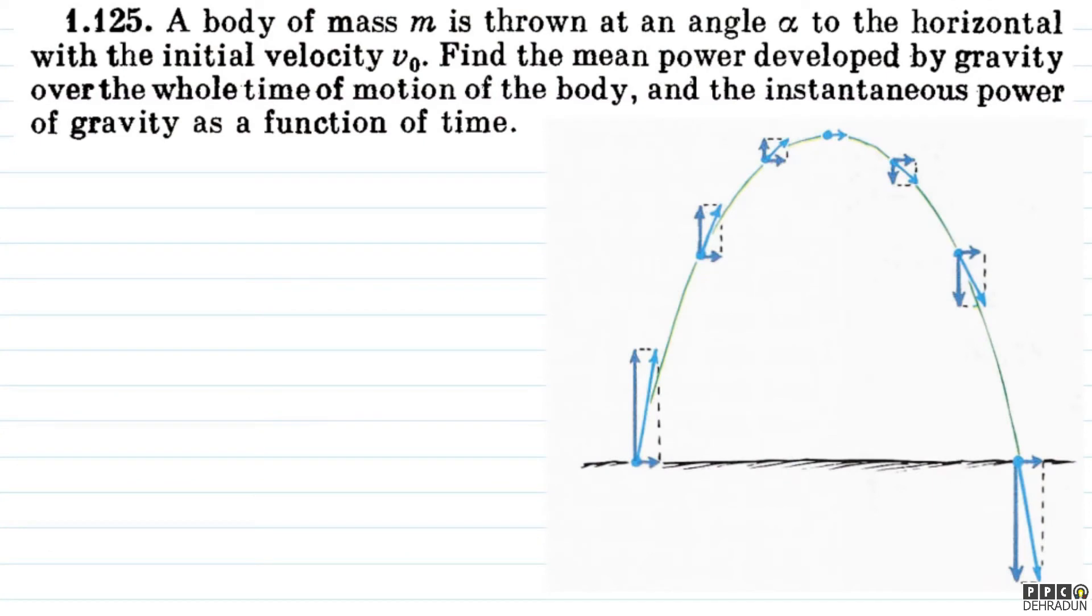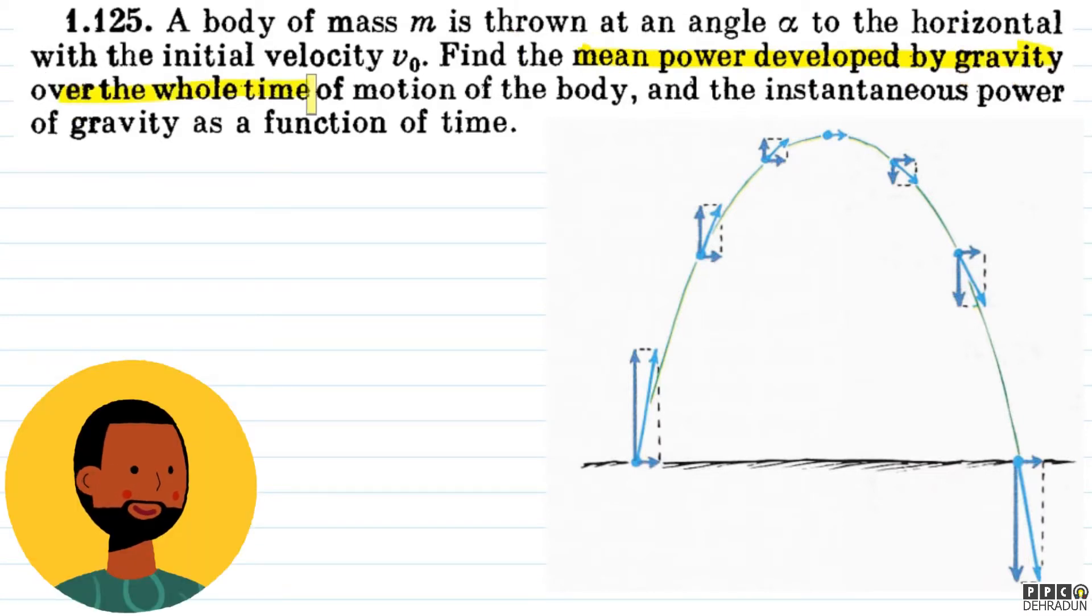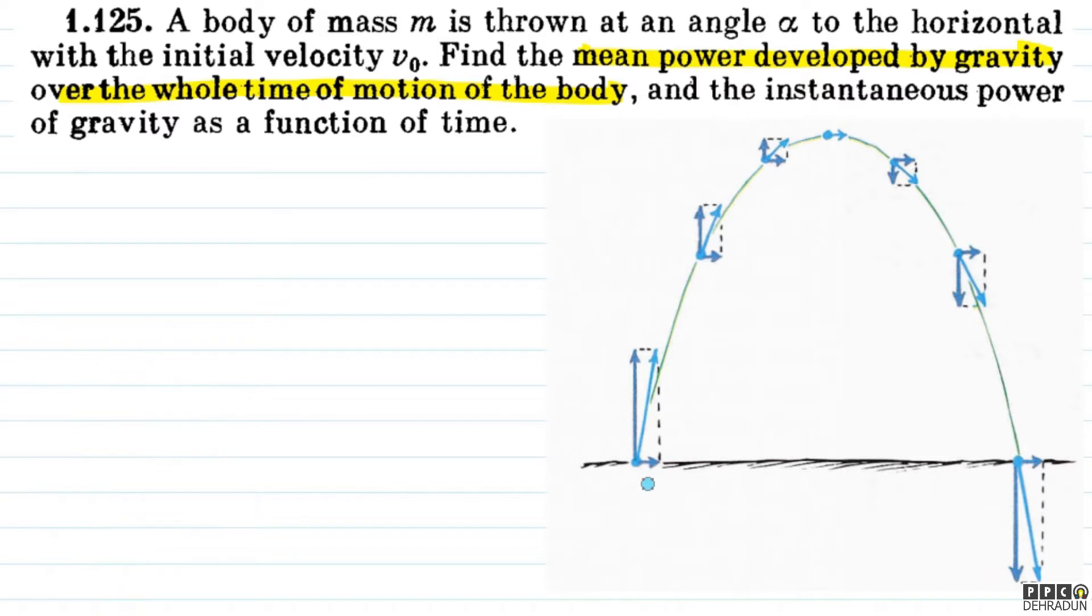If we look at the first part of the question, what do we have to find? We have to find the mean power developed by gravity over the whole time of motion of the body. Meaning, the initial position is the final position. So we have to find the mean power developed by gravity, which is the total work done over the whole time of motion.